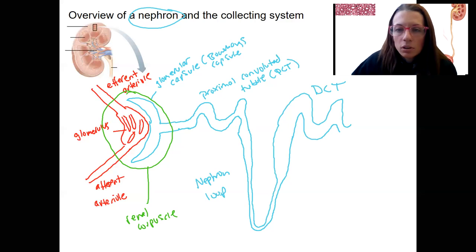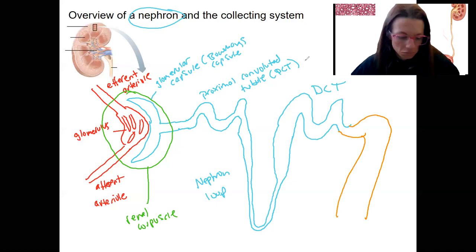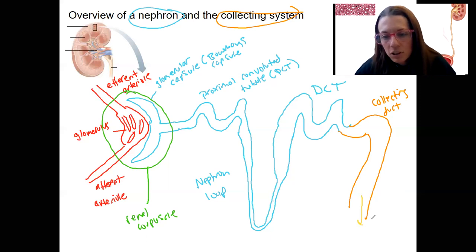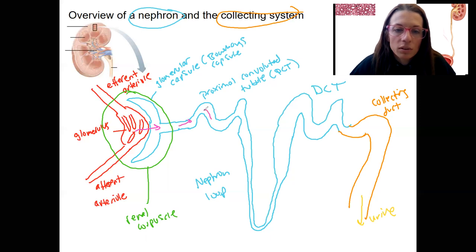From the distal convoluted tubule, we are going to enter the collecting duct system. That is not technically part of the nephron, but is continuous with it. From here, what is going to be urine when it exits here is going to enter those calyces and then the renal pelvis and then the ureter. This is urine. So to go from blood to urine, we're going to have a whole lot of steps occur to this filtrate.